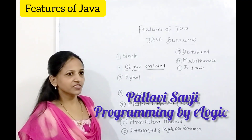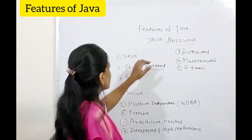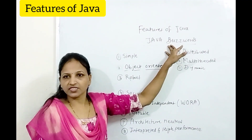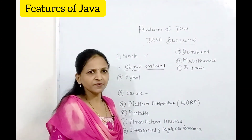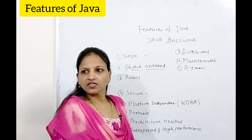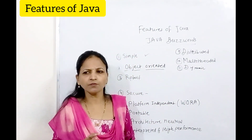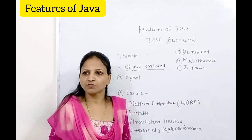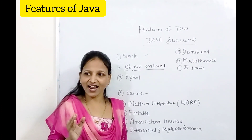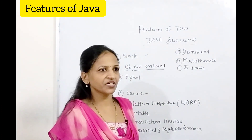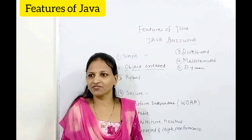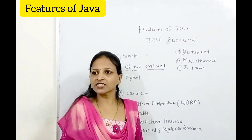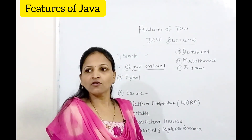I am going to explain the features of Java, also called Java buzzwords. The first feature is that Java is simple. Simple means it is easy to learn. If you have some programming background, at least C or C++, then it is very easy because you already know object orientation, and Java is an object-oriented language. That's why Java is called simple.